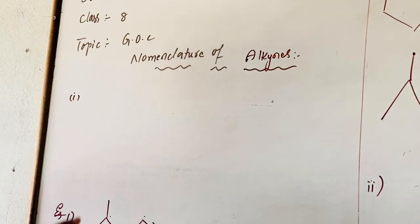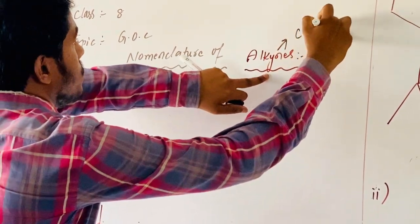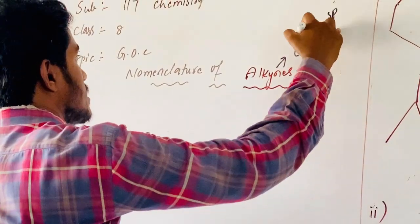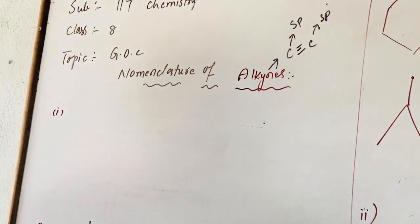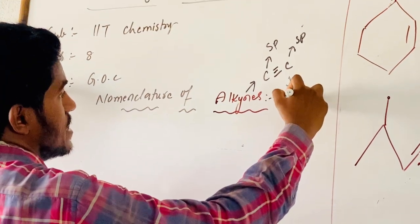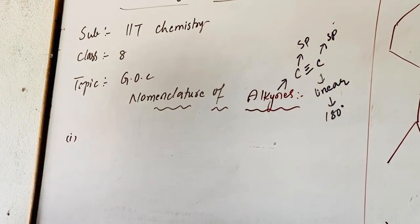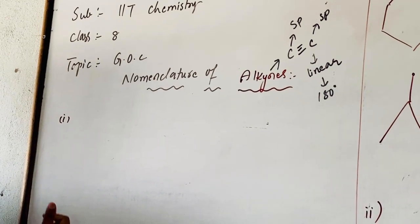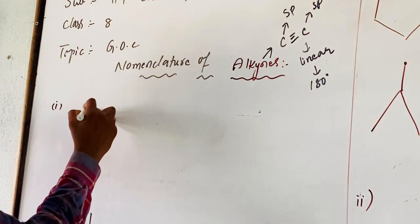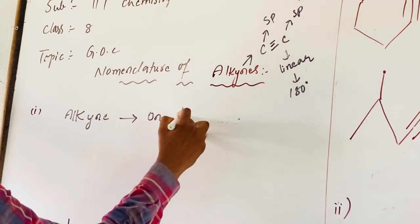Here, 'alk' represents the root word and 'yne' represents the presence of one triple bond between carbon and carbon. This represents SP hybridization — each carbon in an alkyne is SP hybridized. Its shape is linear with a bond angle of 180 degrees. Nomenclature is nothing but giving the name of a compound. Alkyne represents only one triple bond.